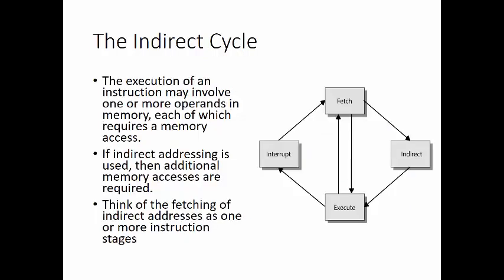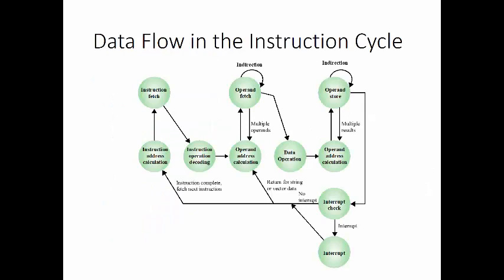The execution of an instruction may involve one or more operands in memory, each of which requires a memory access. If indirect addressing is used, then additional memory accesses are required. The result of adding the indirect cycle is shown in this figure. The main line of activity consists of alternating instruction fetch and instruction execution. After an instruction is fetched, it is examined to determine if any indirect addressing is involved. If so, the required operands are fetched using indirect addressing. Following execution, an interrupt may be processed before the next instruction.